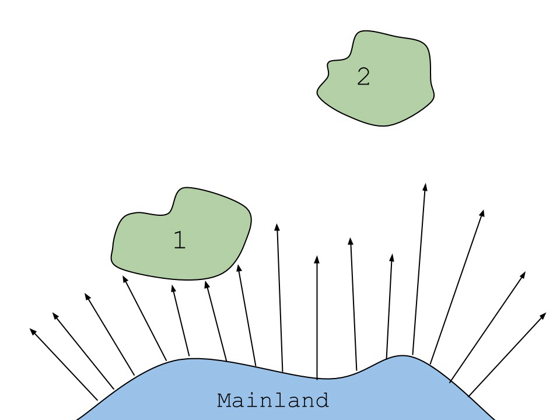Following fumigation the immigration of species onto the islands was monitored. Within a year the islands had been recolonized. Islands closer to the mainland recovered faster as predicted by the theory of island biogeography.